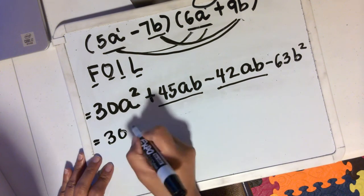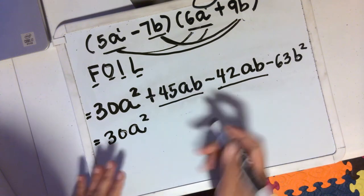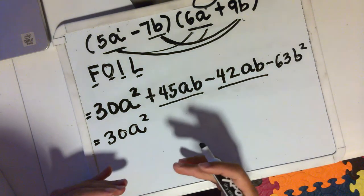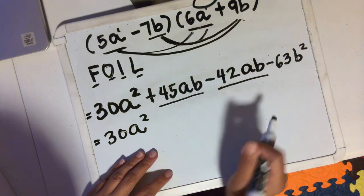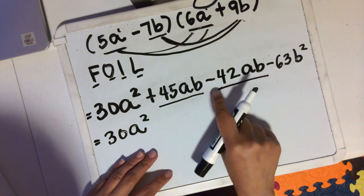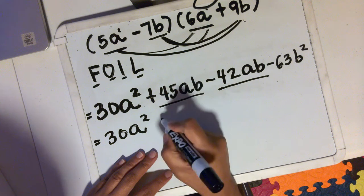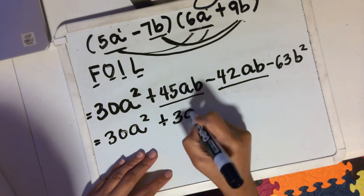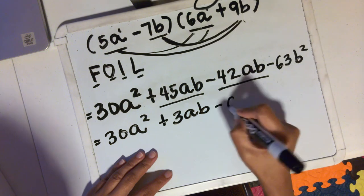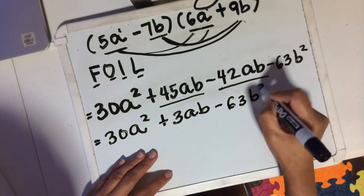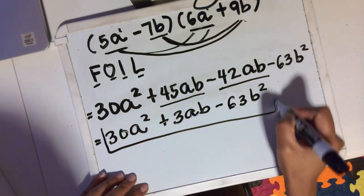So I will copy the ones that don't have any terms that are like terms with them, and I will combine the like terms. So 45ab minus 42ab, that's just 3ab minus 63b squared. And this is our final answer.